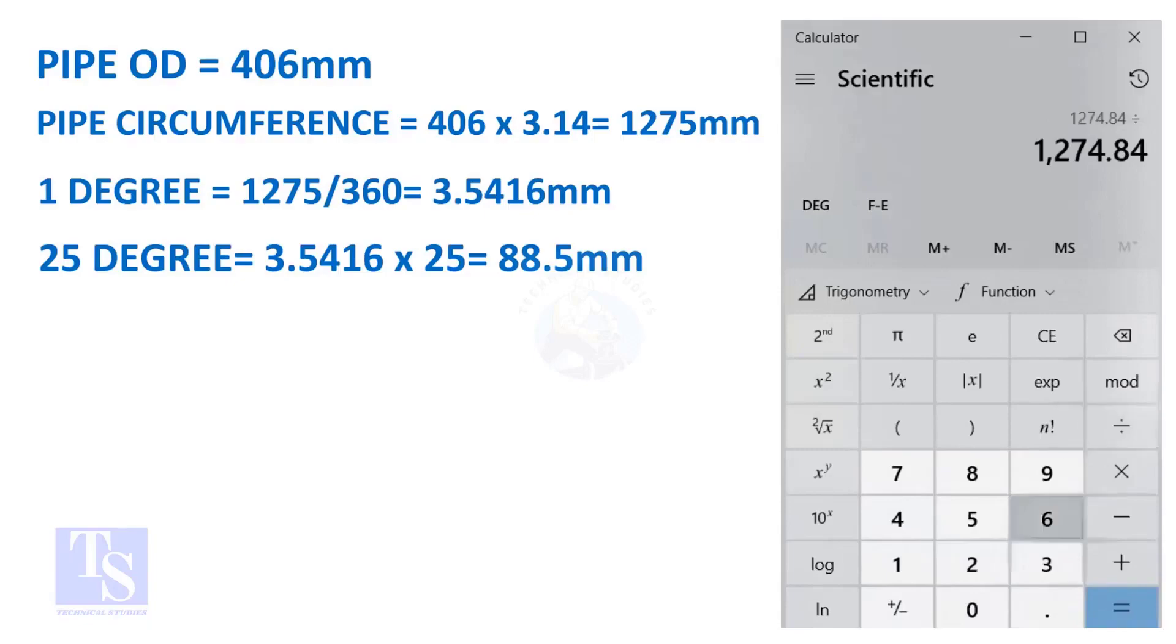And finally, multiply the 1 degree arc length by 25. Now you have the arc length of 25 degrees. You can apply this formula to get the arc length of any degree.